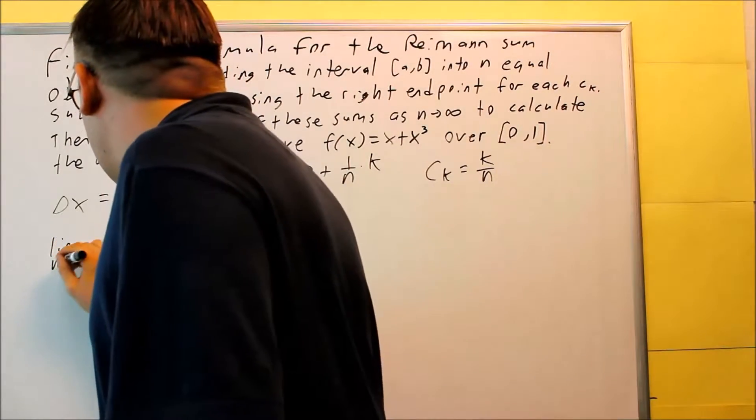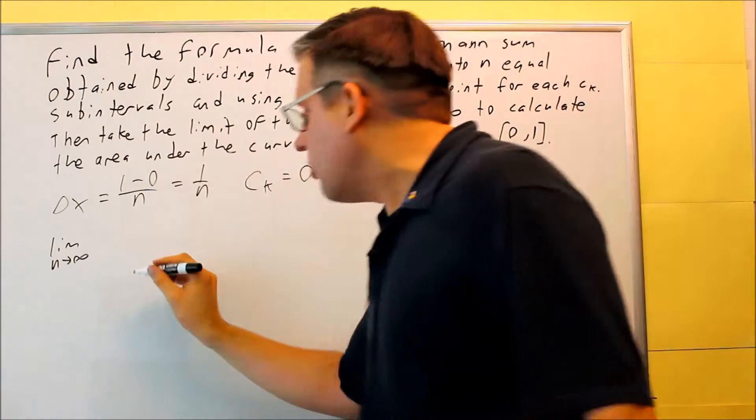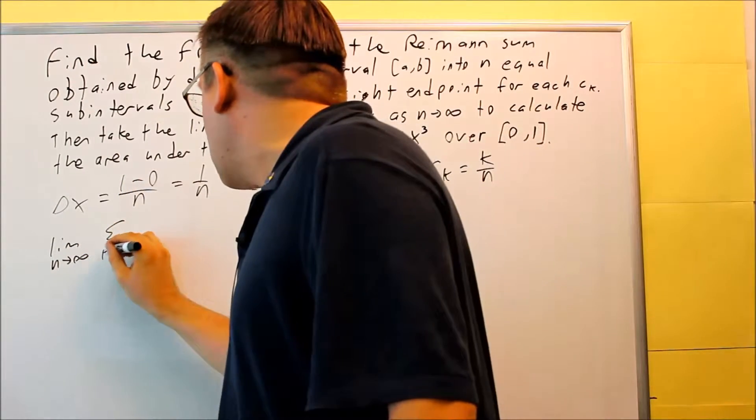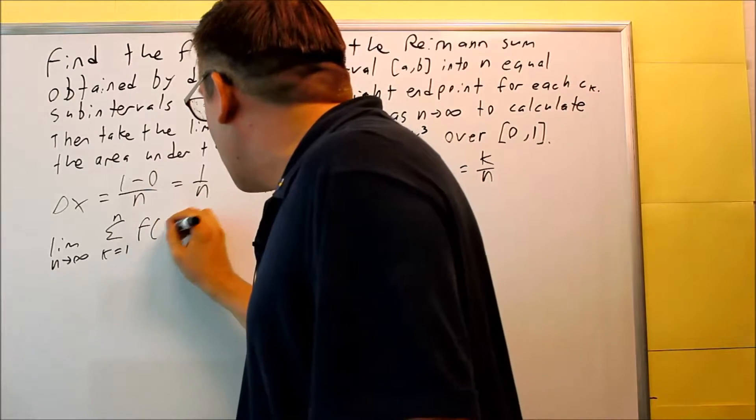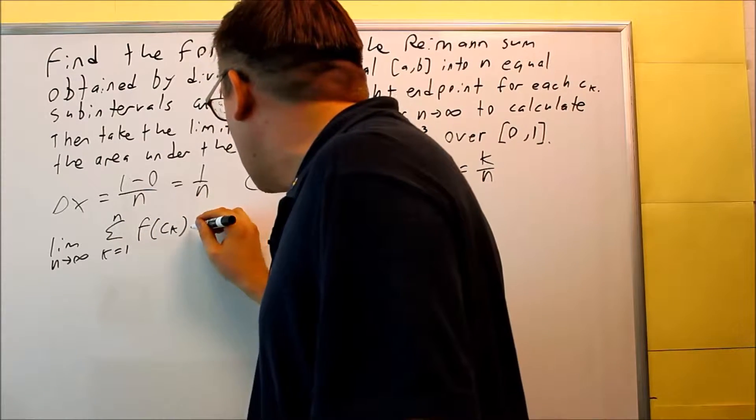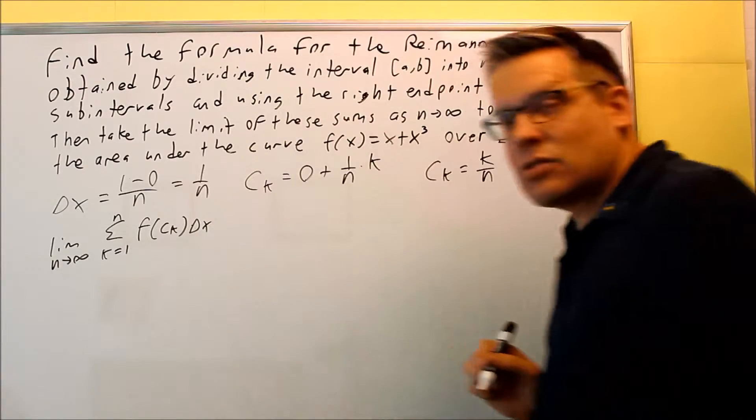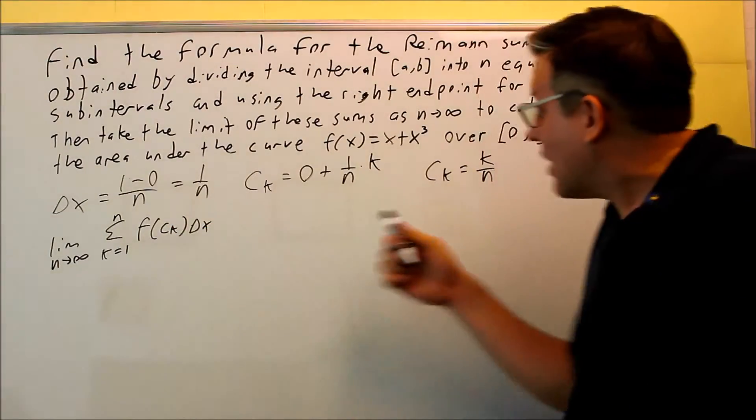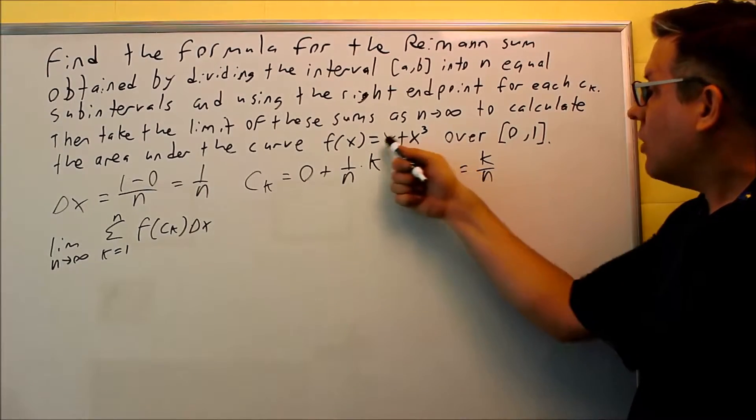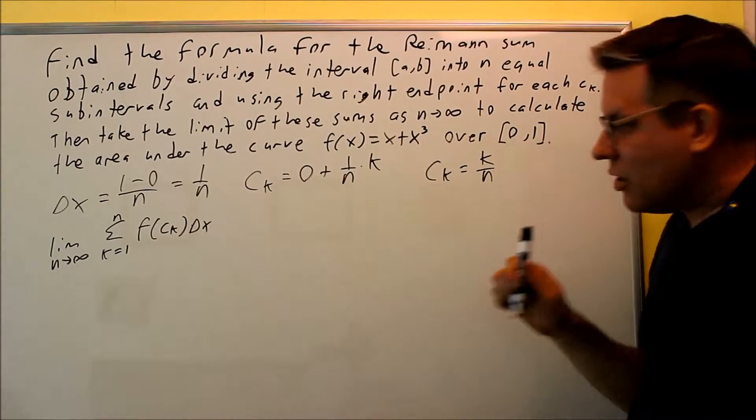The specific formula that we're going to use is the one we talked about before. Limit as n goes to infinity. Summation k equals 1 to n. And then your f of ck times your delta x. We're going to put, we want to find the f of ck, which means we're going to put k over n into both the x's here.